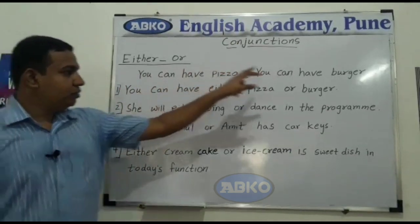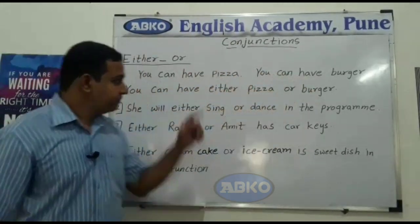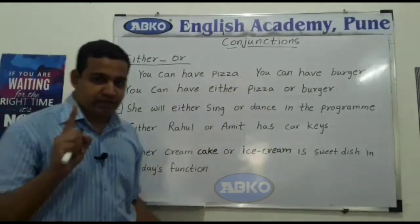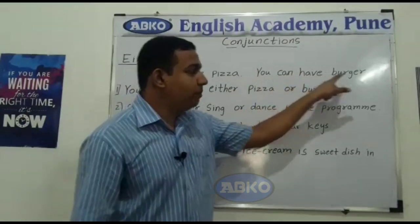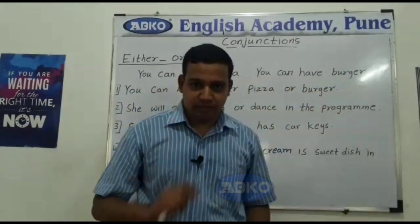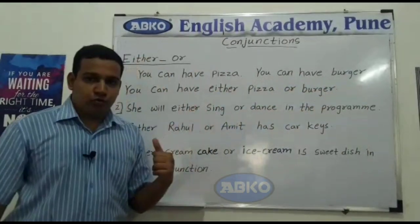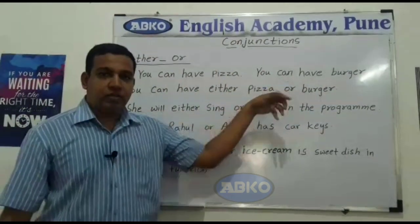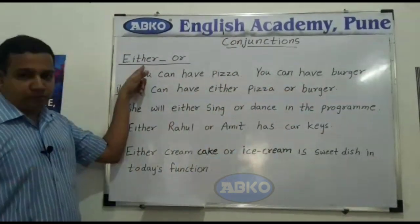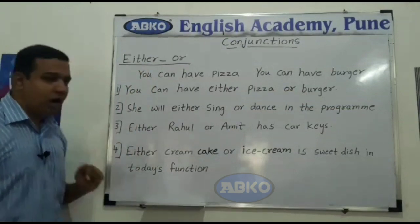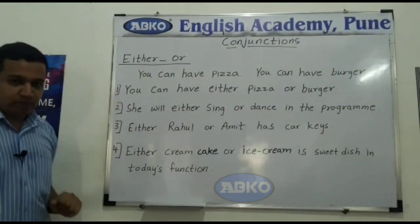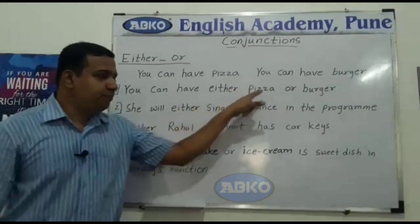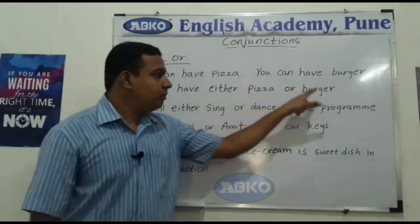Let us take an example. Here there are two sentences: 'You can have pizza' and 'You can have burger.' Now I will join these two sentences using either...or. You can have either pizza or burger.